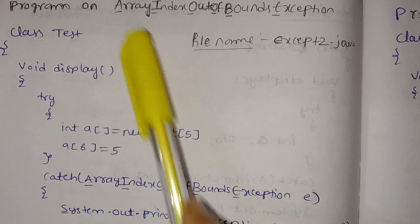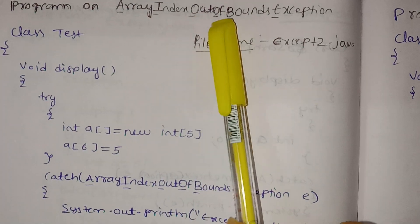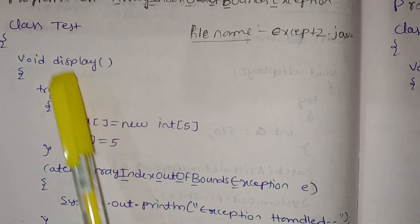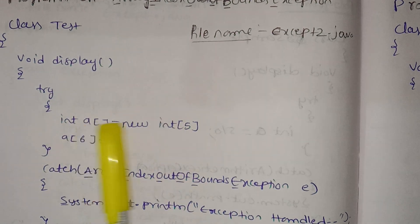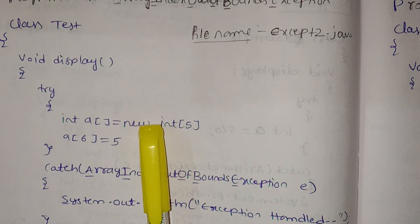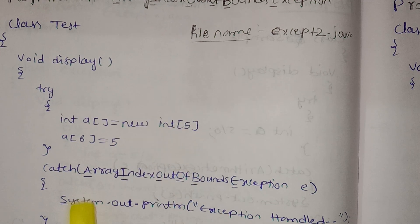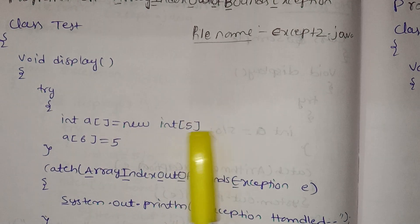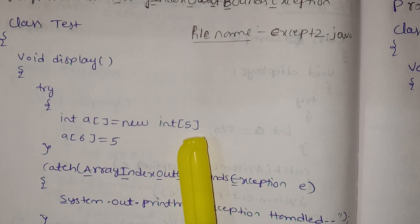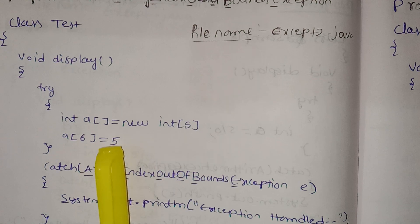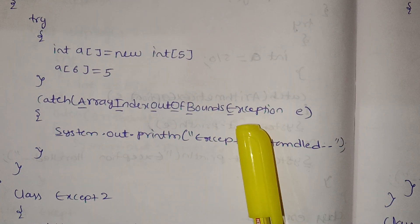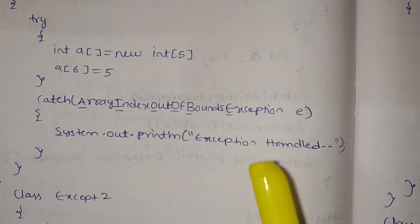Here we have to add the ArrayIndexOutOfBoundsException handler. It is very simple. We can test using the class name and the display method. Here we have an array — you can see the operator. We have an array of size 5, and executing with index 6 is out of bounds since 5 is the max valid range. This raises an ArrayIndexOutOfBoundsException — we use catch with variable e and system.out.print to print 'Exception handled'.